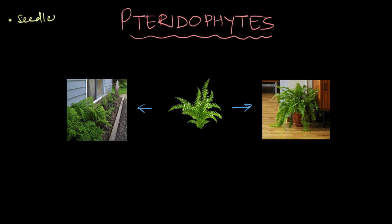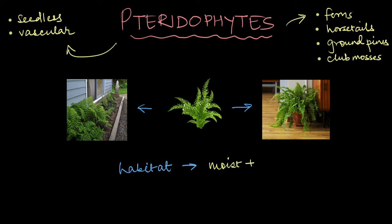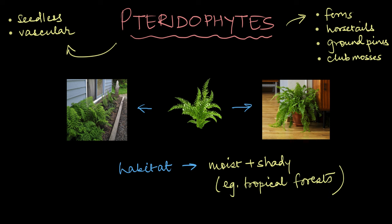Pteridophytes are a group of seedless vascular plants that originated over 350 million years ago. These plants include ferns, horsetails, ground pines, club mosses, and more. Most of these plants are terrestrial, and you will typically find them in abundance in moist and shaded places, like tropical forests, especially with water in their vicinity.